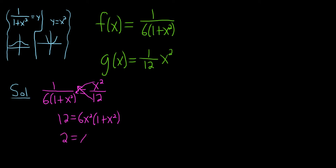Equals x squared. So dividing by 6 here, 1 plus x squared. So 2 is equal to distributing the x squared. x squared times 1 is x squared. x squared times x squared is x to the fourth.